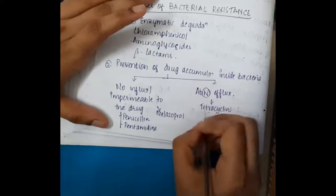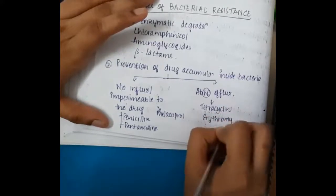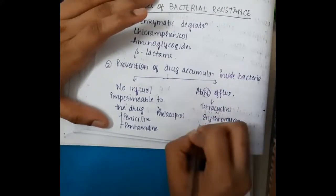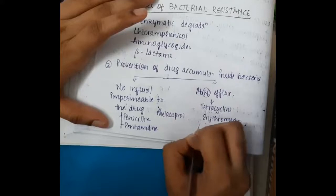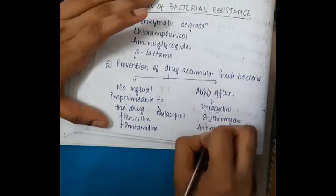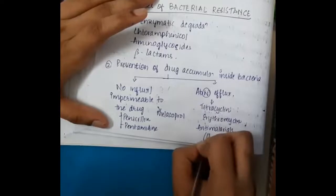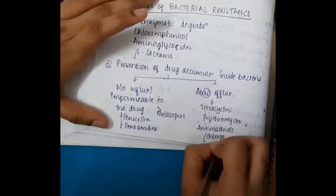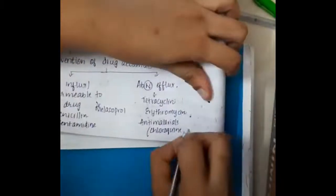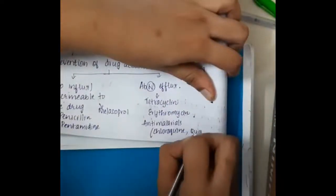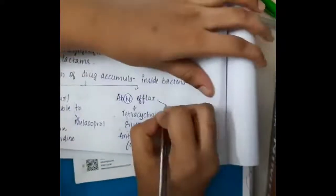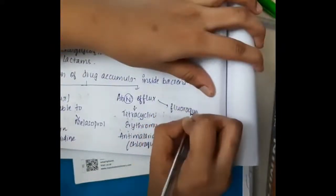The second mechanism is the abnormal efflux mechanism, meaning the drug which has entered the cell will go out of the cell through efflux pumps, and thus the drug does not act on the bacteria. These include tetracycline, erythromycin, antimalarials like chloroquine and quinine, and also fluoroquinolones.